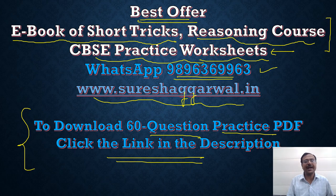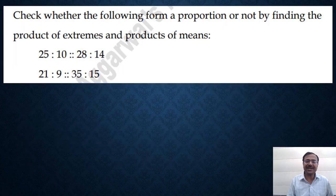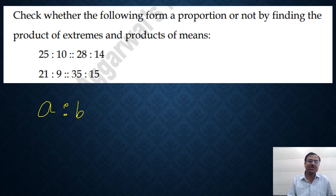Let's see the questions. In the first one, check whether the following form a proportion or not by finding the product of extremes and product of means. Very important - when you have one ratio and then proportionality sign and then another ratio, see ratio here.